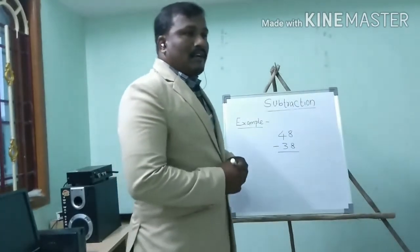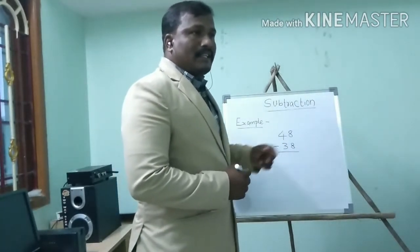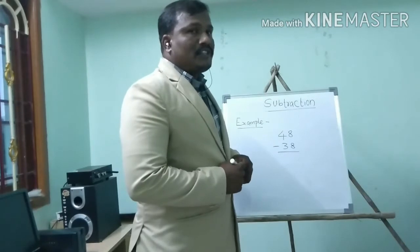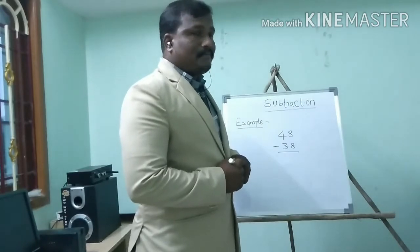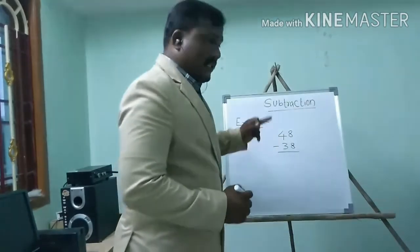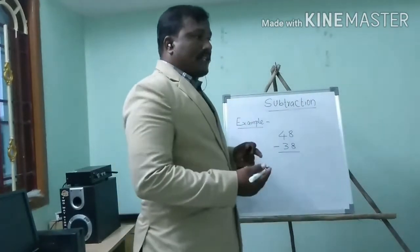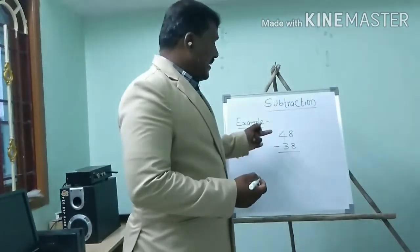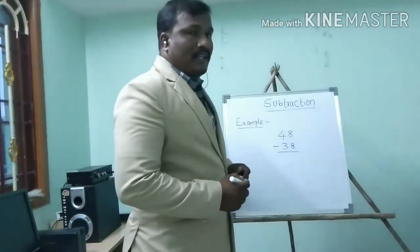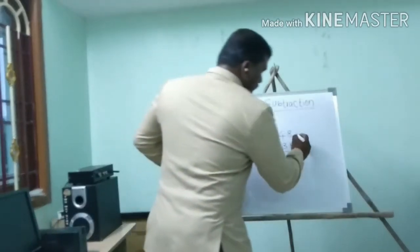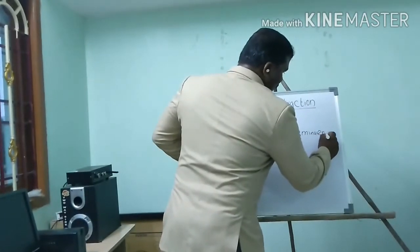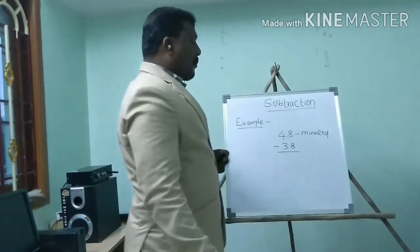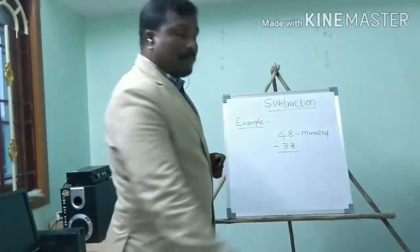48 — the number from which we subtract — that number is called minuend. The number that is subtracted is called subtrahend. The answer is difference. So as per the subtraction properties, 48 is the minuend, and 38 is the subtrahend.